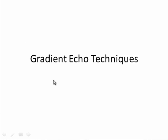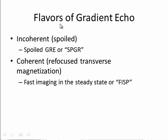So we'll talk now about some gradient echo techniques. There really are just two flavors of gradient echo imaging: incoherent or spoiled, and coherent, in which the transverse magnetization is refocused. This is called fast imaging in the steady state, or FISP.